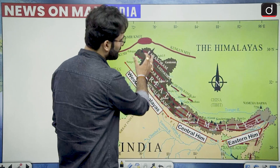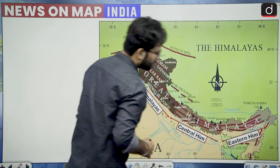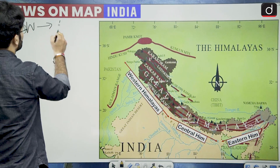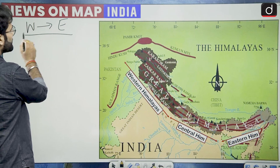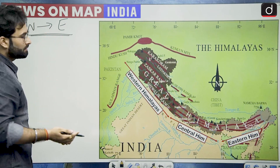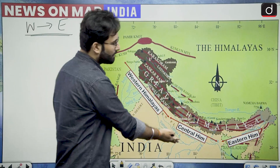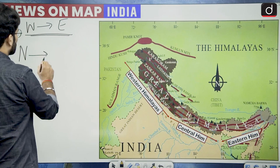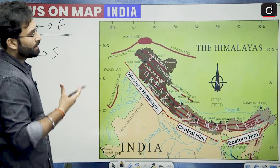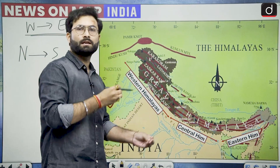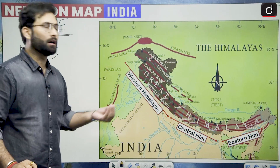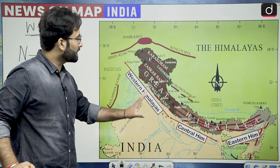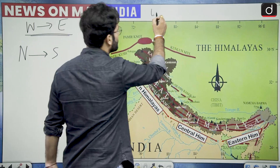Here you can see this belt is your Himalayas. When we talk about west to east or east to west expanse of Himalayas, we can divide Himalayas into three parts: western Himalayas, central Himalayas, and eastern Himalayas. And when we talk about north to south expanse, we can divide Himalayas into trans Himalayas, greater Himalayas, lesser Himalayas, and middle Himalayas. Basically in this question, we will be talking about the west to east expanse.